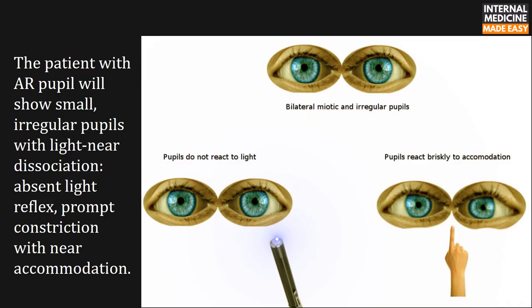The patient with AR pupil will show small irregular pupils with light-near dissociation, which means absent light reflex and prompt constriction with near accommodation. In short, light-near dissociation means the light reflex is absent but the accommodation reflex is present.